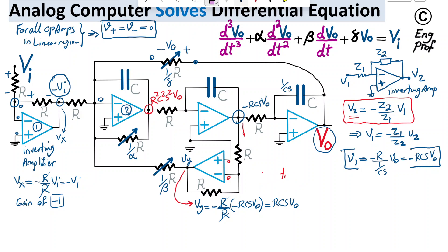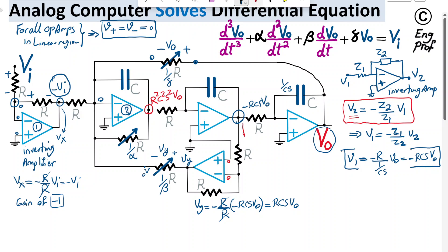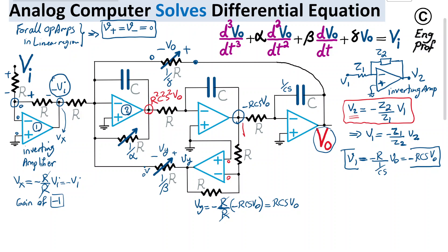Now we have Vy on the right side of the beta potentiometer and 0 volts on the left side (virtual ground), so there is plus-minus Vy across this potentiometer, where Vy equals RCS·Vout.